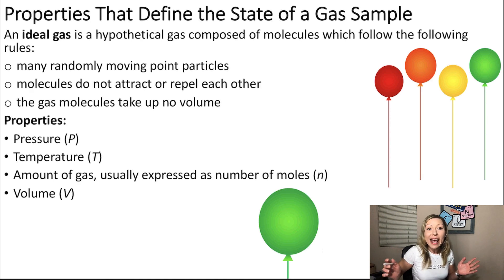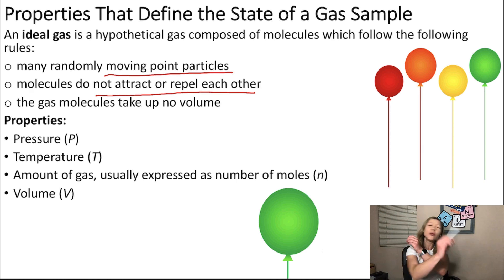So, an ideal gas is just a hypothetical gas that is composed of molecules which follow a couple of rules. First of all, there will be many randomly moving point particles. And these particles or molecules do not attract or repel each other. They just move all around quickly or maybe slowly. But there is no attraction. And the gas molecules will also take up no volume in case of an ideal gas. This simplifies our equation.